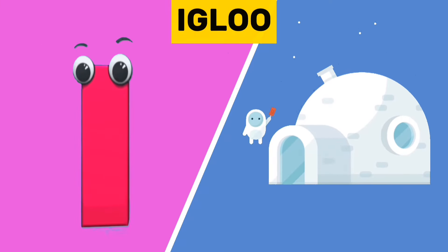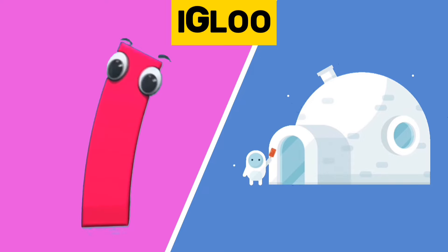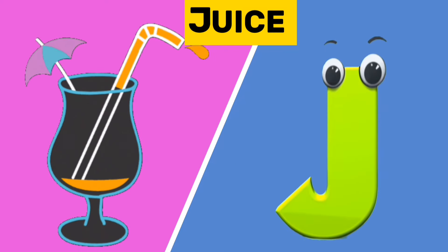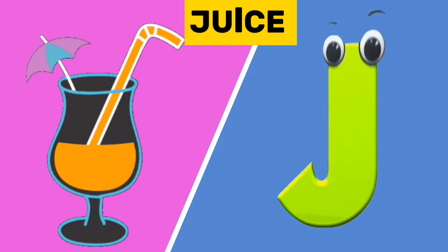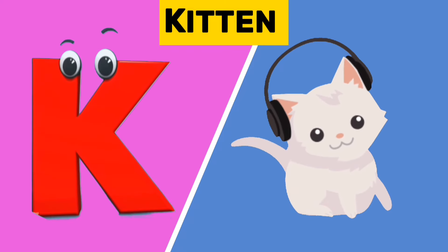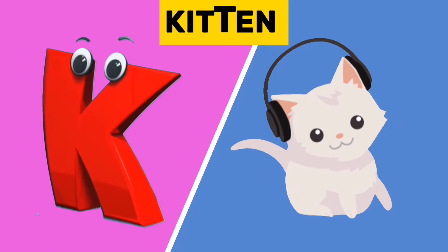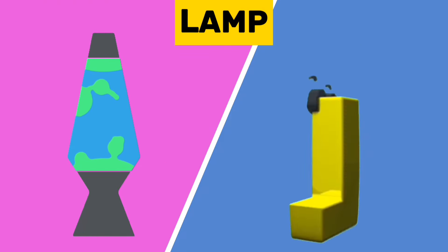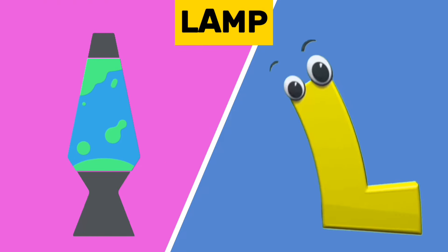I is for igloo. I, i, igloo. J is for juice. J, j, juice. K is for kitten. K, k, kitten. L is for lamb. L, l, lamb.